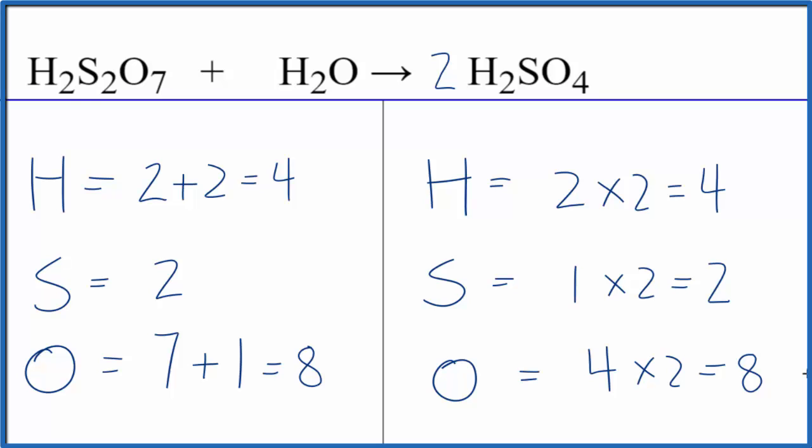This is Dr. B with the balanced equation for H2S2O7 plus H2O yields H2SO4. Thanks for watching.